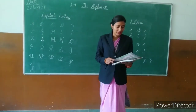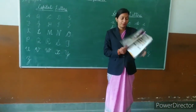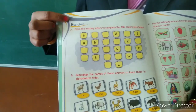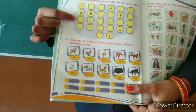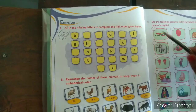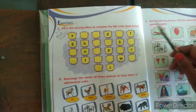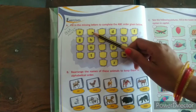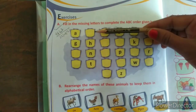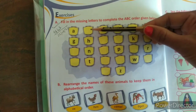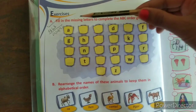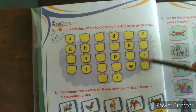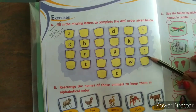Now it's time to give you homework. Open page number 6. There are exercises written there, and this is your homework. Exercise A: Fill in the missing letters to complete the ABC order given below. You have to write the missing letters in the blanks. Like after A, what should come? B. So write B. Then after B, what should come? C. So write C. You all know the alphabetical order — so do this work. This is your homework, and do it nicely and carefully.